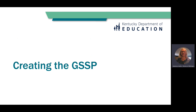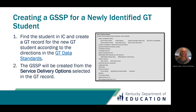Let's first talk about creating the Gifted Student Service Plan. To create a GSSP for a newly identified student, find the student in Infinite Campus and create a GT record according to the directions and the GT data standards. The GSSP will be created from the service delivery options selected in the GT record.